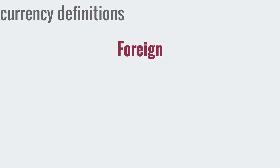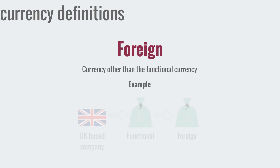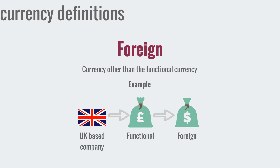Another type of currency is foreign currency, which is simply any currency other than the functional currency of the entity. So for a UK-based company using pound sterling as their functional currency, a foreign currency would be anything that is not pound sterling — US dollars, for example. This is a relative term because foreign currency obviously depends on where the entity is based. A US company's functional currency is most likely US dollars, so a foreign currency to them would be the euro or the pound.